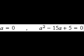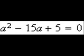Now we set each factor equal to 0. We get a equals 0 as one solution. a squared minus 15a plus 5 equals 0 as our next solution, but this needs to be solved further and can only be done using the quadratic formula.